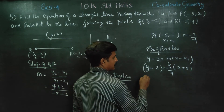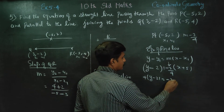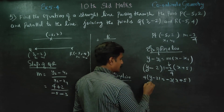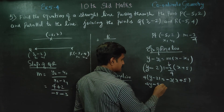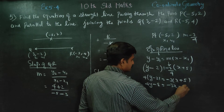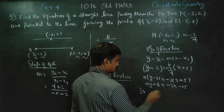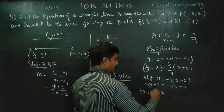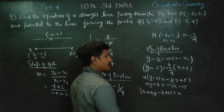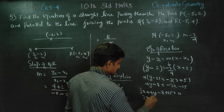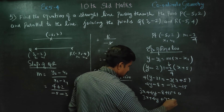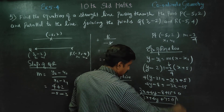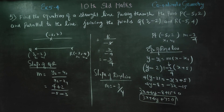Now applying the one-point slope formula and cross multiplying: 4 into y minus 2 equals minus 3 into x plus 5. Expanding: 4y minus 8 equals minus 3x minus 15. Rearranging: 3x plus 4y minus 8 plus 15 equals 0. Therefore, 3x plus 4y plus 7 equals 0 is the equation of the required straight line.